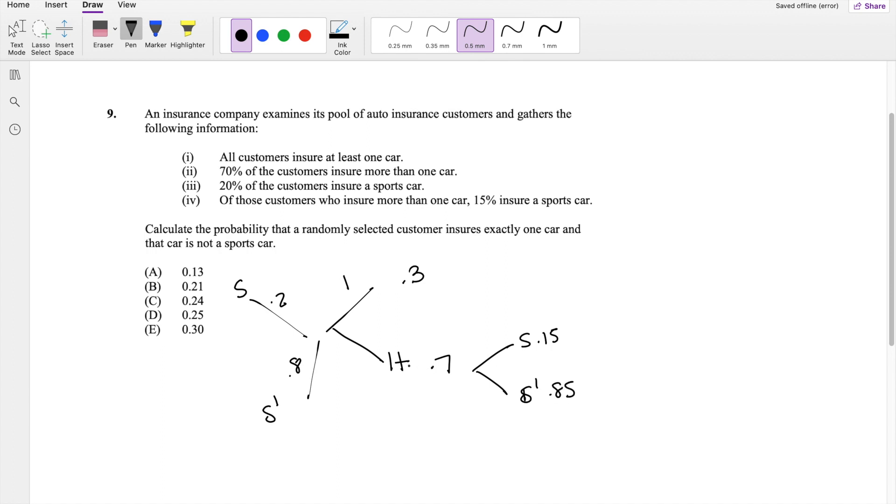If they insure more than one car and is a sports car, that probability as a percentage of a whole is 0.7 times 0.15, which is equal to 0.105. Likewise, the bottom one would be 0.7 times 0.85, which is equal to 0.895.